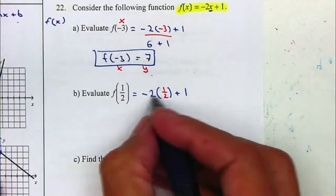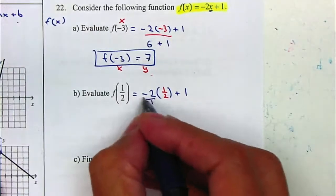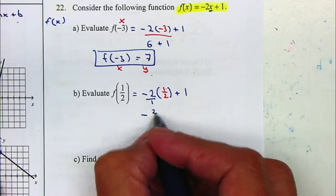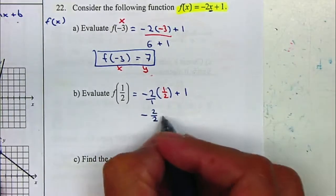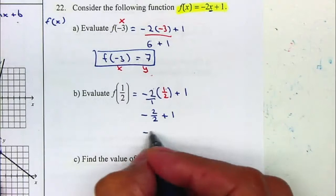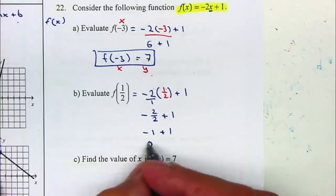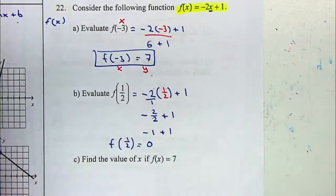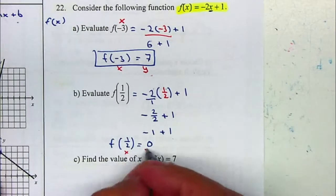Now to multiply a whole number by a fraction, you're going to place it over 1. Negative times positive is negative. 2 times 1 is 2. 1 times 2 is 2. Plus 1. You can also cancel the 2's, and that just gives you a negative 1, plus 1 is 0. So f of 1 half is 0. This is your x, and that's your y value.